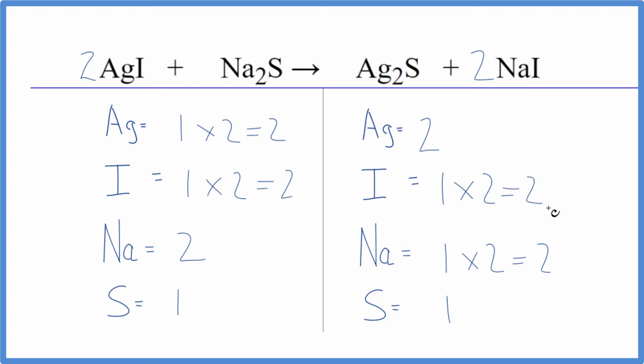This equation is balanced. In this reaction, when these two substances combine and react, we end up with this silver sulfide and sodium iodide.